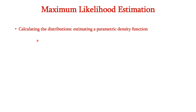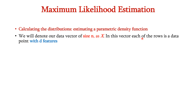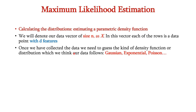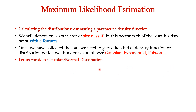We know that the goal of MLE is to fit the optimal probability distribution to some data. Now let us see how to calculate the distributions or estimate the parametric density function. Let us denote our data vector of size n as x, where each of the rows is a data point with d features. Once we have collected the data, we need to guess the kind of probability density function or distribution which we think our data follows. There are many types of distributions like Gaussian, exponential, Poisson, etc. In our case, we are considering the Gaussian or normal distribution.